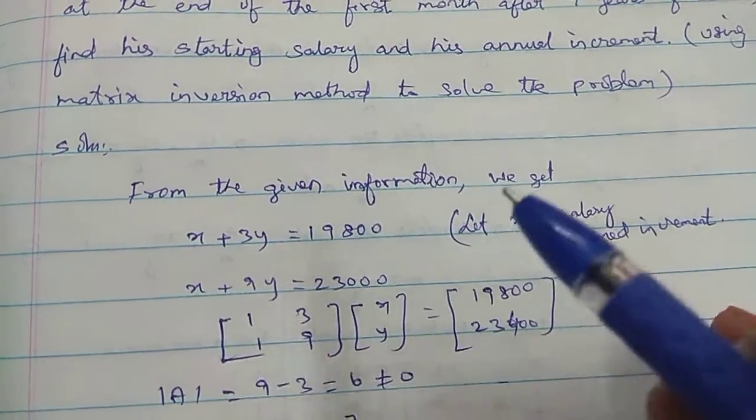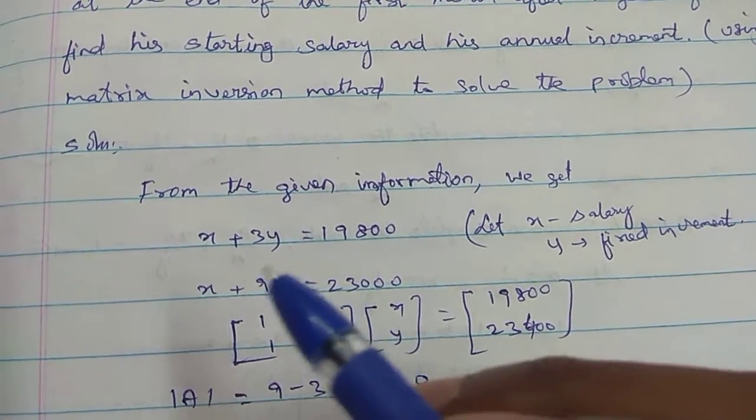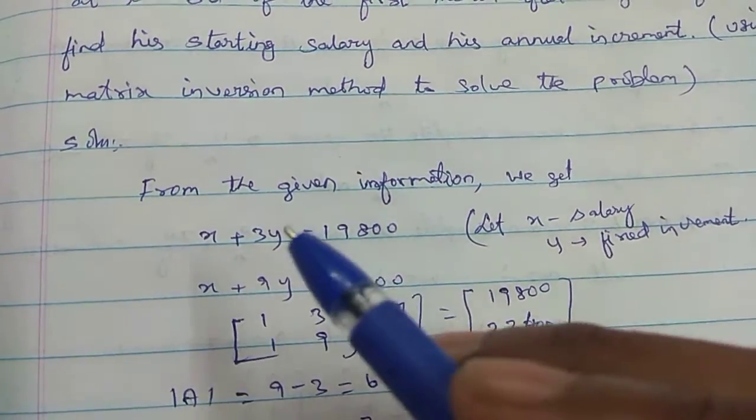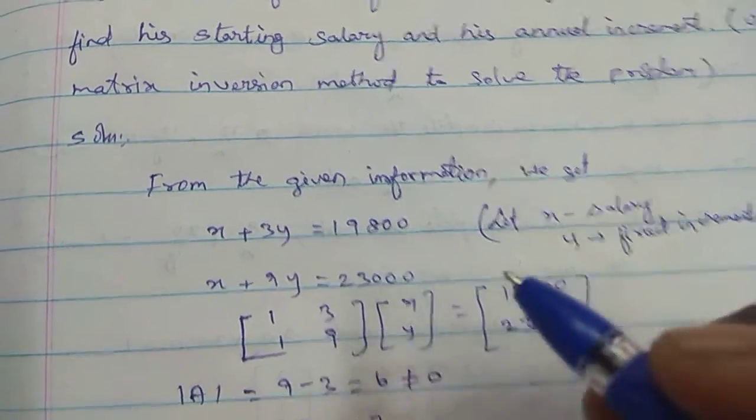From the given information we need to get Ax equals b form. So 1 3, 1 9 times variables x y equals 19,800 and 23,400.